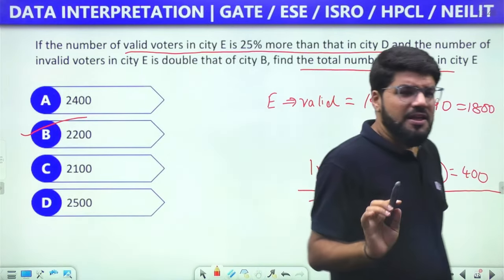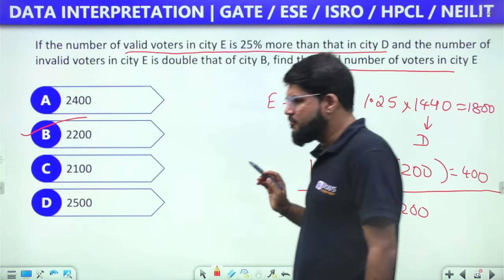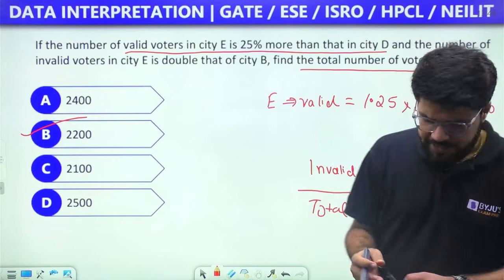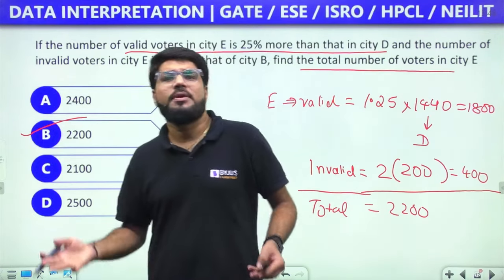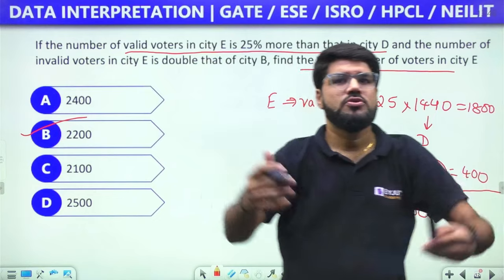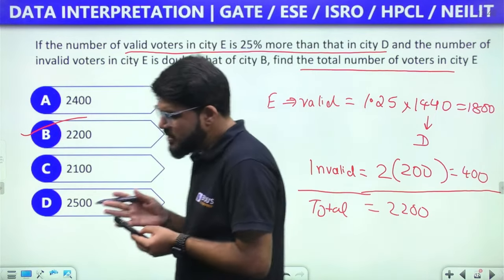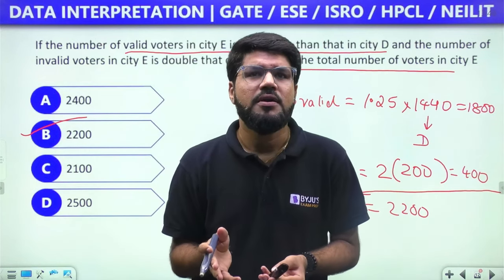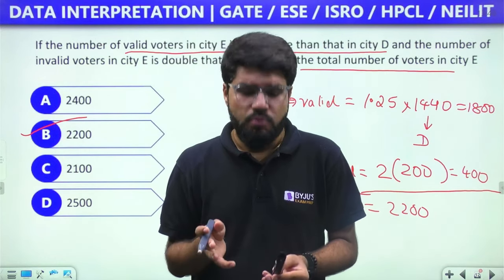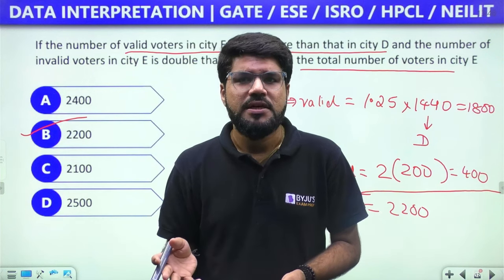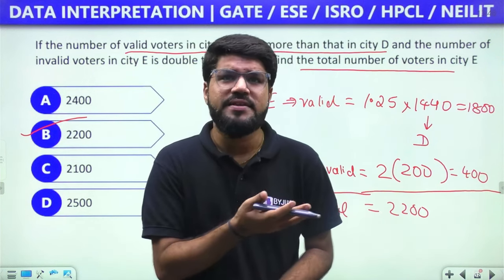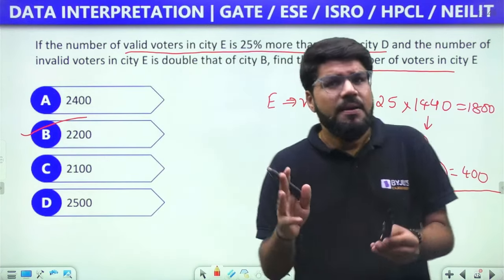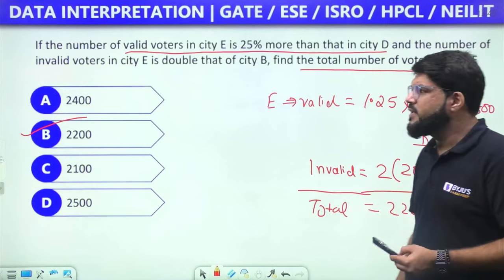The answer is option B: 2,200. You just have to analyze the data carefully. Such questions expect two markers in the GATE examination and require rigorous practice. The concepts behind most data interpretation questions are mostly percentage and ratio — just two or three fundamentals — but the real skill is in analyzing and reading the data carefully.